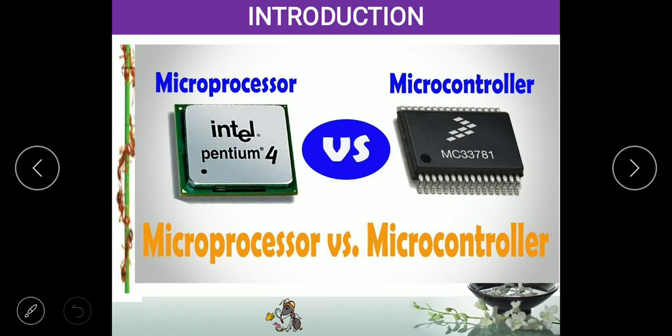What is the difference between microprocessor and microcontroller? Both look the same — both have the same number of 40 pins. The size remains the same, but the difference is the microprocessor has external RAM and the microcontroller has internal RAM. A microprocessor can do any operation and can control any device, while a microcontroller will only control a specific device, not all devices. Examples of microprocessors include computers, PLCs, laptops, and mobile phones.